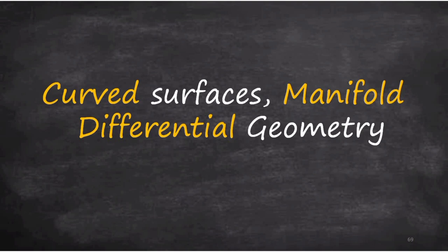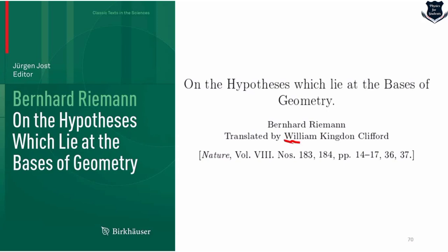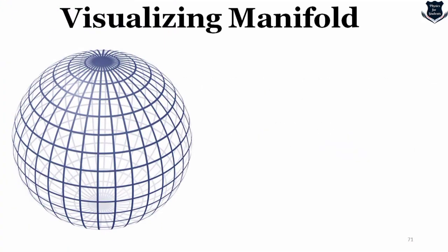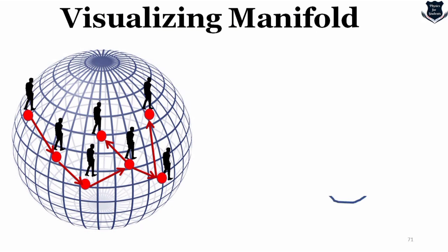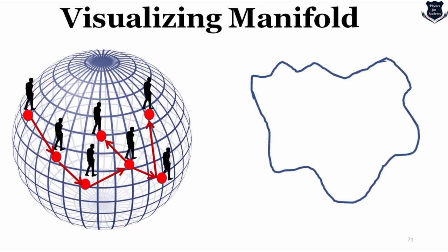We now come to the second core part of general relativity: curved surfaces, manifolds, and differential geometry — just touching base. Bernhard Riemann first introduced the concept of manifold in his book, which was translated by the great mathematician William Kingdon Clifford. To visualize what a manifold is: here is a sphere with a person standing on it. If the person moves around the sphere and we plot those movements, the manifold — the sphere — becomes something that locally resembles Euclidean space at each point.